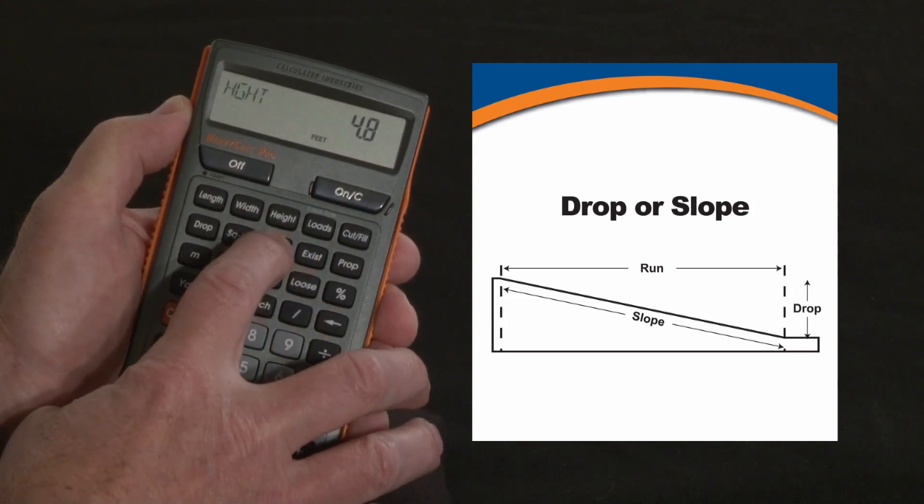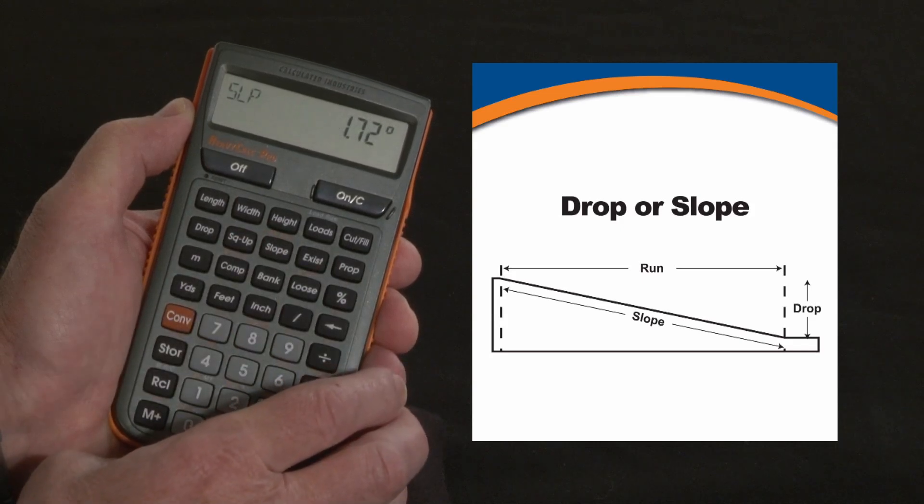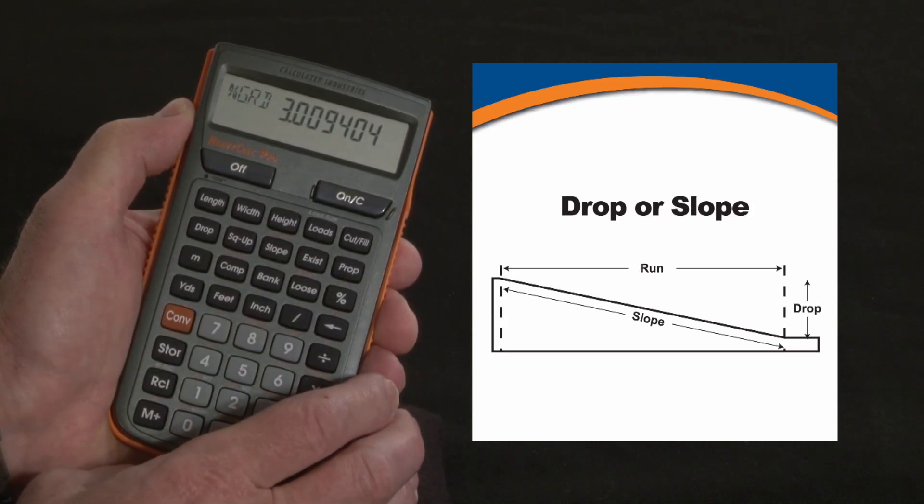What's the slope or percent grade? Press the slope key, there's the slope ratio, there's the degrees, 1.72 degrees, and it's a three percent grade.